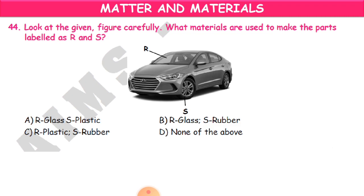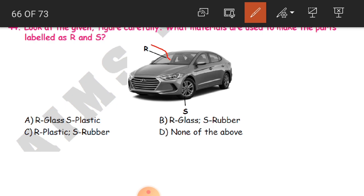Question 44: Look at the given figure of a car carefully. What materials are used to make the parts labeled R and S? R is the glass — the windshield. S is the tire, and the tire is made of rubber. So R is glass and S is rubber. B is the correct answer.